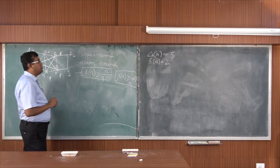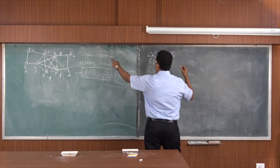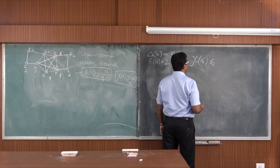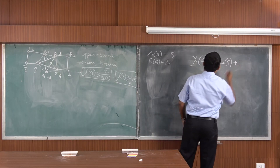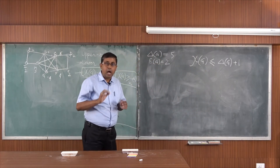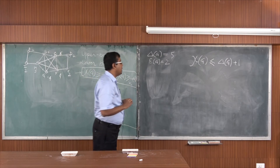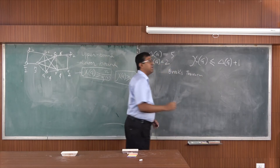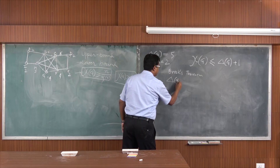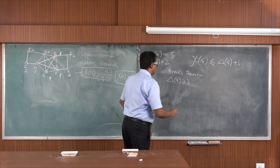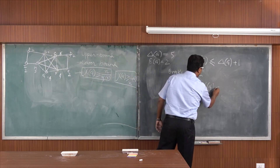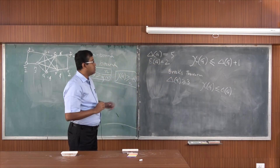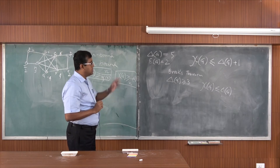The general upper bound theorem states that the chromatic number χ(G) ≤ Δ(G) + 1. There is a more specific version called Brooks' theorem, which states: if Δ(G) ≥ 3, then χ(G) ≤ Δ(G) — that is, just Δ(G) and not Δ(G) + 1. This is one of the key theorems we can apply.